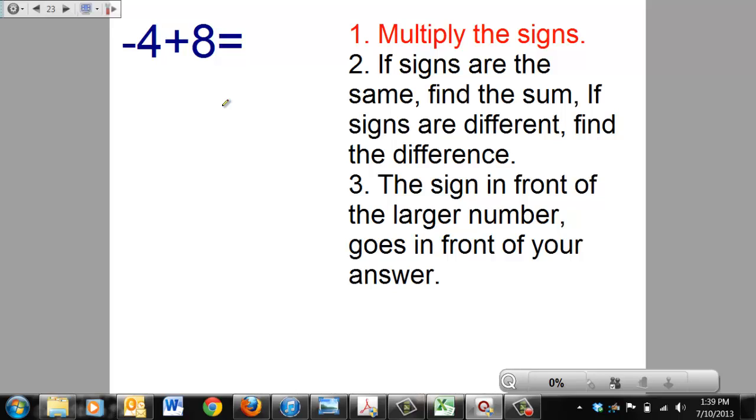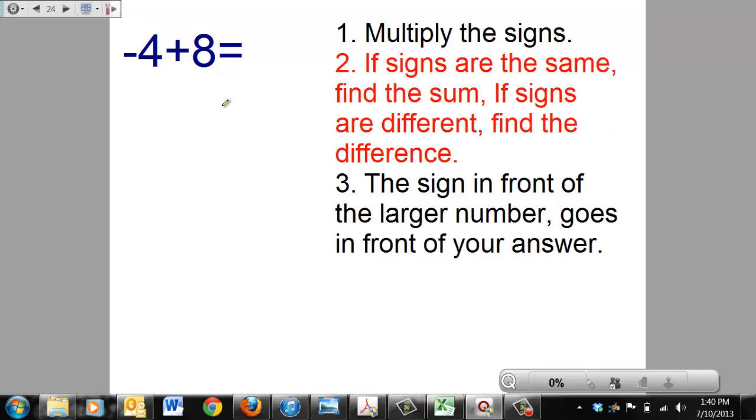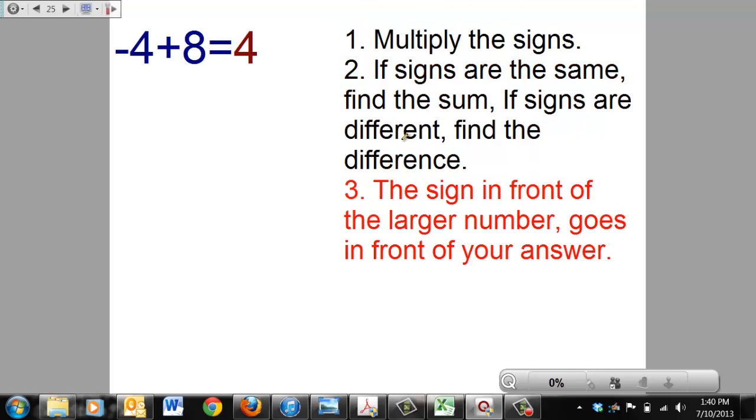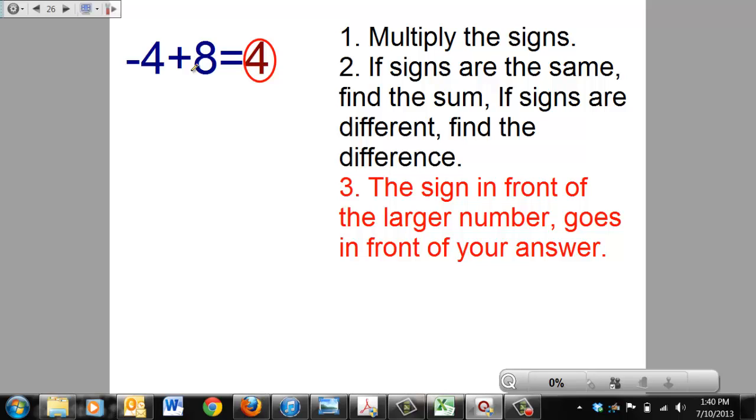Here's another one. Negative 4 plus 8. Step 1 says to multiply the signs, but the multiplying signs only applies to the ugly problem situation. We don't have the ugly problem going on here. Since we don't have the ugly problem, let's skip it. Let's go straight to step 2. If signs are the same, find the sum. If signs are different, find the difference. In this case our signs are going to be different, so we're going to find the difference. The difference between 4 and 8 is 4. And then step 3, the sign in front of your larger number goes in front of your answer. 8 has the largest absolute value, it is positive, so our answer is going to be positive 4, and you're done. And notice you don't have to put that plus sign in front of the 4. If the sign is not listed, we automatically assume the number is going to be positive.